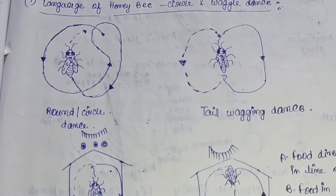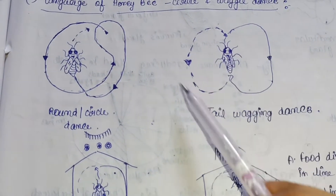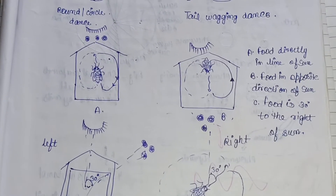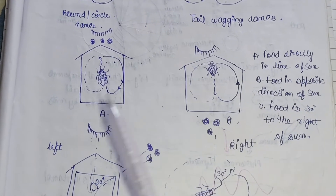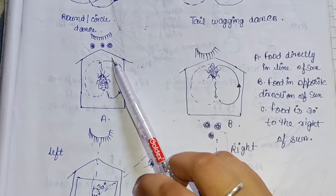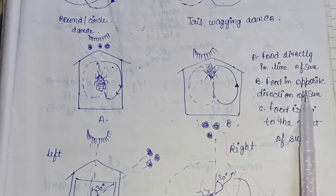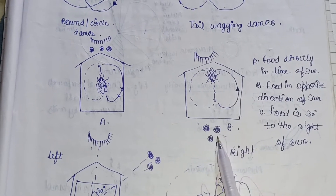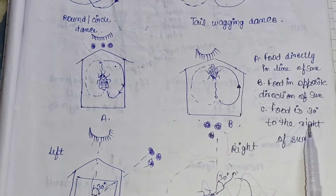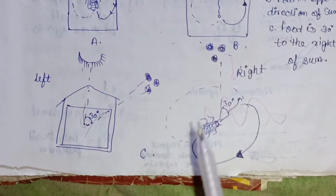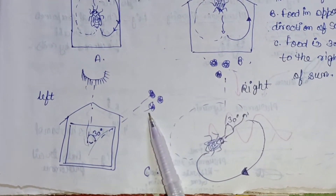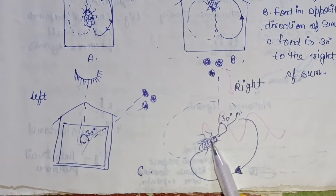This diagram depicts the waggle dance — the honeybee performs the figure-eight circuits. Another diagram shows direction examples: food directly in line with the sun means the honeybee is straight up; food in the opposite direction of the sun means the bee positions downward; and if the food is 30 degrees to the right of the sun, the honeybee adjusts her orientation accordingly.